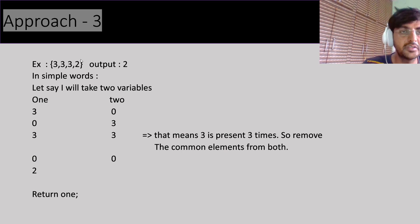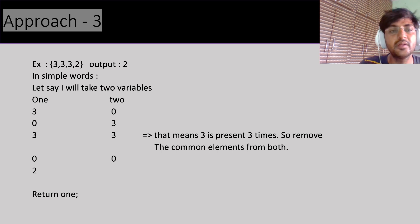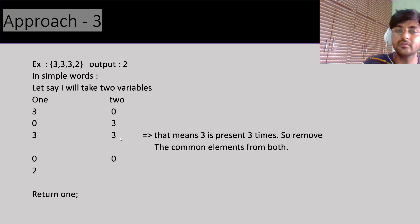The fourth element is 2 — it appears for the first time, so it goes into 'one'. At the end we return 'one', which has 2. That is the answer. For these operations we use bit manipulation. We use bitwise AND to find common elements in 'one' and 'two', and AND with NOT of common to remove them.